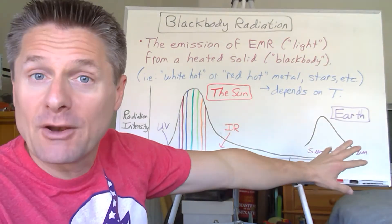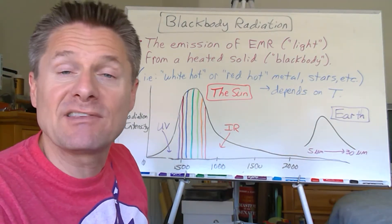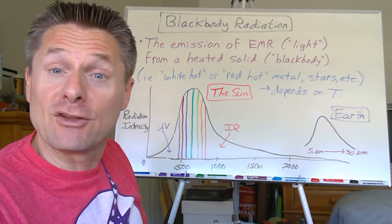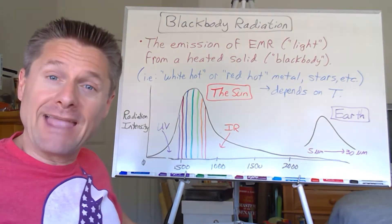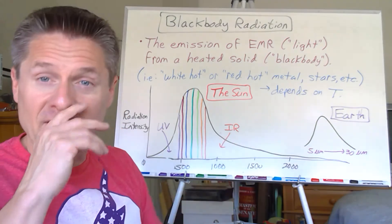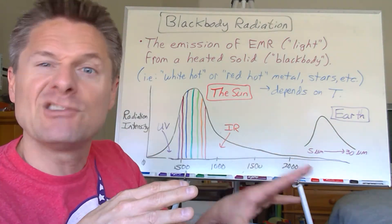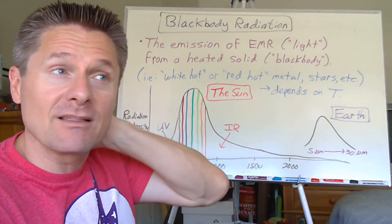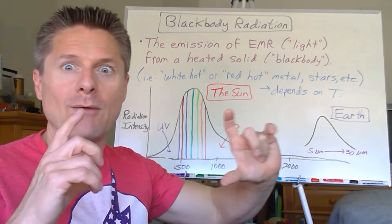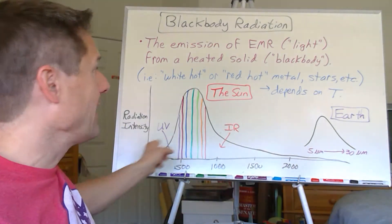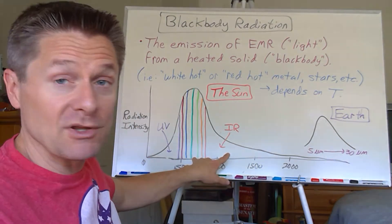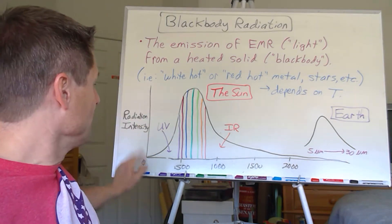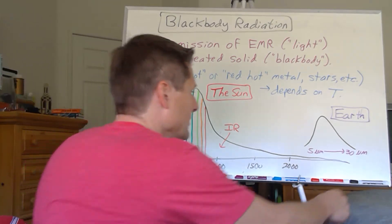Let's compare the sun and the earth. The black body curves have a similar shape — a lot like the distribution of molecular speeds we saw with gases. Because of kinetic energy transfer from collisions between gas particles, you get an asymmetric distribution with a specific mathematical form. Similarly here, we're looking at radiation intensity versus wavelength in nanometers.